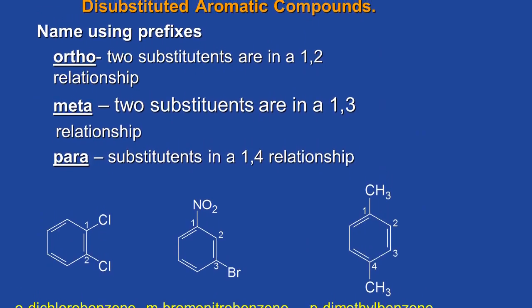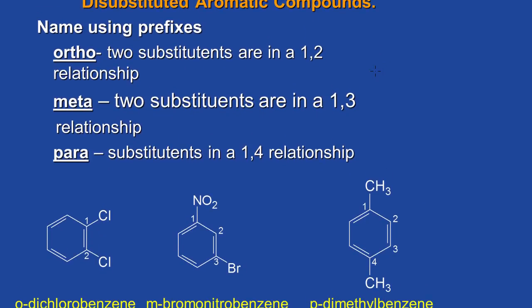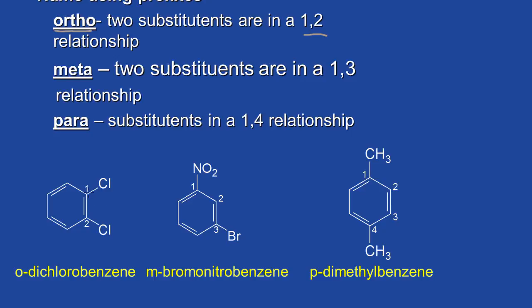If you have disubstituted aromatic compounds, we use prefixes instead of numbers. Remember, for the cycloalkanes and cycloalkenes we use numbers to indicate where substituents are located, but not with the aromatic compounds — we use prefixes. We use the prefix ortho, which shows the two substituents in a 1-2 relationship. For example, here we have a benzene ring with two chlorines in a 1-2 position, so this would be called ortho-dichlorobenzene. Rather than write out the word ortho, we just use a lowercase o.